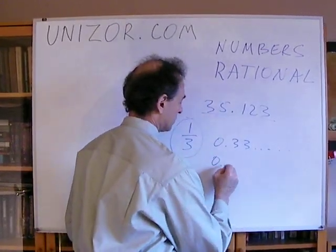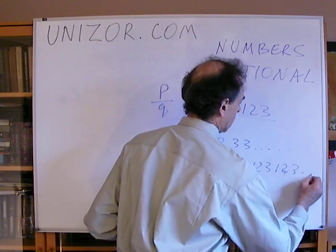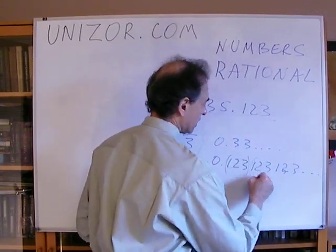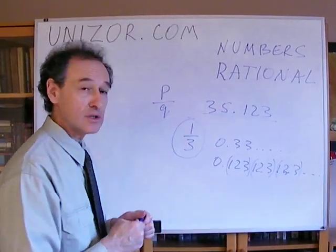Sometimes you can have numbers like this, 0.123123123, et cetera. So, 123 is a repeated group.